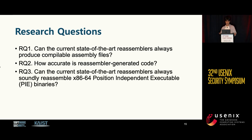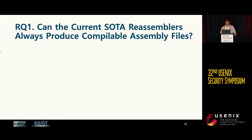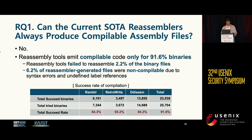We focus on three research questions. RQ1: can current state-of-the-art reassemblers always produce compilable assembly files? The answer is no. During our experiments, we observed that not all binaries in our benchmark could be successfully reassembled. Furthermore, not every reassembler-generated code was compilable — they had syntax errors and undefined symbol references. As a result, the reassembly tools produced compilable code for less than 92% of binaries.